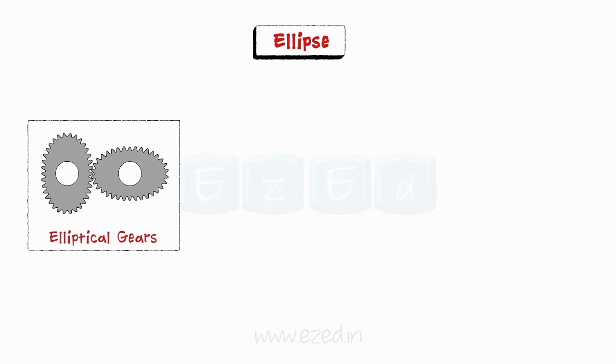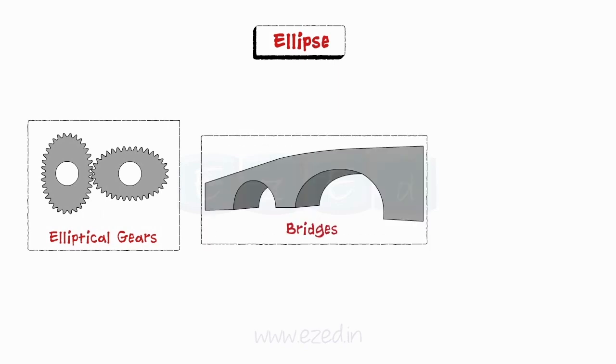Elliptical shape is used in the construction of elliptical gears of textile machines, bridges, arches, etc.